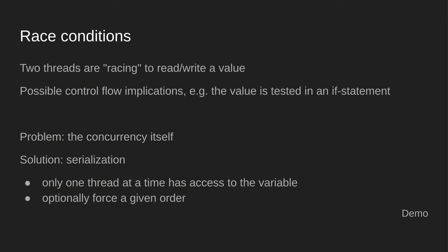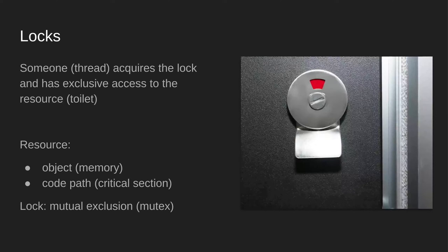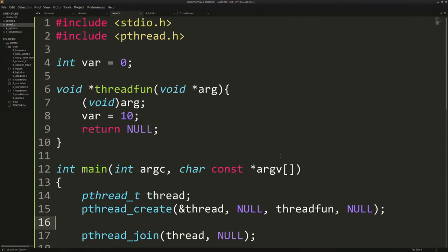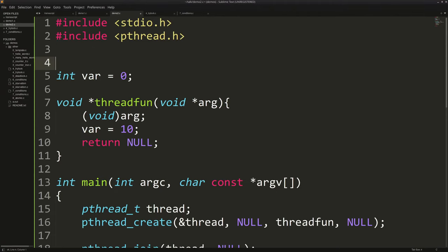So in this case we solved it by serializing our program again — we synchronized our thread to the main process and forced an order. Another solution could be locks. Think about a restroom: a toilet stall has a lock so only one person at a time has access. You don't want to sit down and have somebody else barge in. In multithreading, you have locks for much the same reason. In this case our variable is like the toilet. So let's solve this problem using locks.